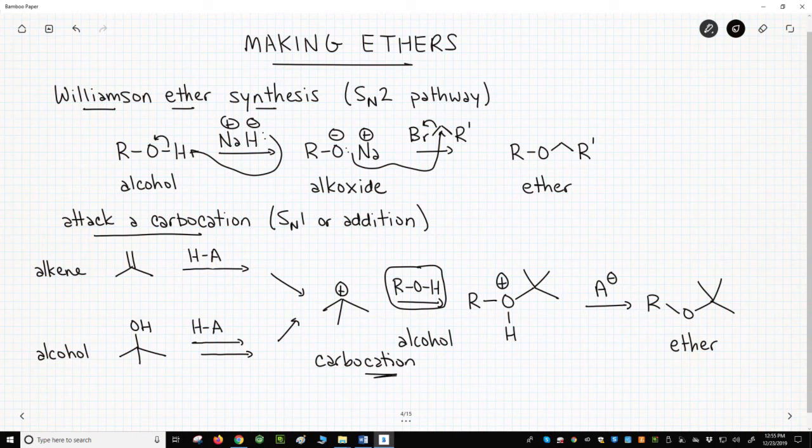How can we make carbocations? There are several methods. A common one is to protonate an alkene, and that's this top structure on the bottom half of the screen. The resulting carbocation from this protonation can be attacked by the alcohol to make a new CO bond of the ether.